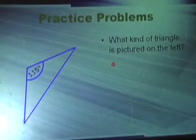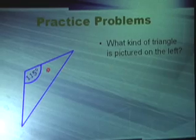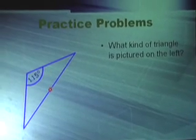What kind of triangle is this? Obtuse. And why? Because it's greater than 90. Correct.